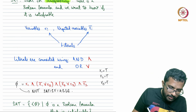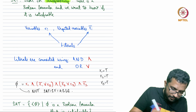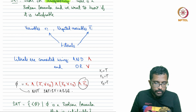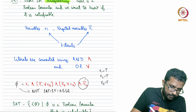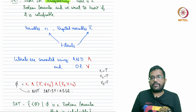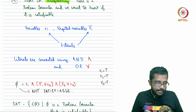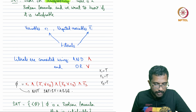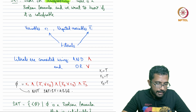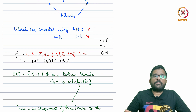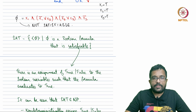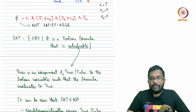Now suppose the last clause was not there. Then the formula would have been satisfiable with x1 true, x2 true, and x3 true. So the original clause is not satisfiable. The question of satisfiability is: given a Boolean formula, is there an assignment of true or false to its variables such that the formula evaluates to true?